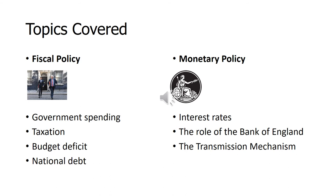So fiscal policy — as we can see, we've got a picture there of the Chancellor and the Prime Minister. What we investigate is how the government are going to spend their money, how they receive that money through taxation, and how they're going to handle any deficits. So if there's a shortfall between taxation income and what they intend to spend, how are they going to cope with that? Is that going to result in a bigger national debt, and what are the implications for that?